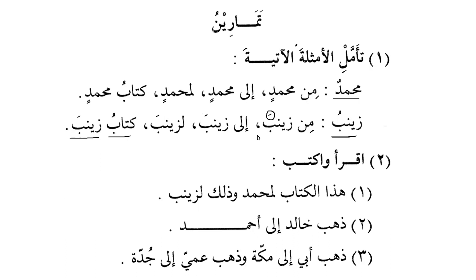The original construction should be with Kasra: Min Zainab-i, Ila Zainab-i, Li Zainab-i, and Kitabu Zainab-i. But it does not have Kasra. Do you remember the reason why? Because it is a diptote - it is Mamnoo min as-Sarf. The reason is that it is a feminine Arabic name, and all Arabic names for females are Mamnoo min as-Sarf - they do not accept Kasra.